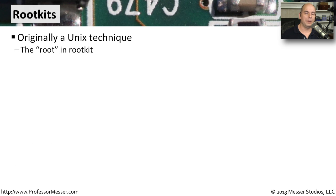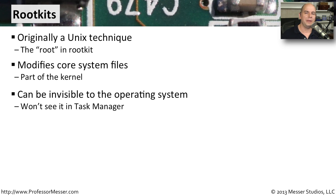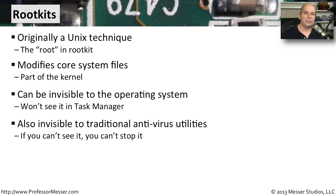A security threat that's not as common as malware but certainly a concern are rootkits. Rootkits come from the name root in Linux, and they get into the kernel of your computer and modify core system files. What's even worse is they become invisible — it's impossible to find a rootkit through normal means. You won't see it in your task manager or see the files because it's part of the operating system kernel itself. Because of this, your antivirus and anti-malware software can't see, identify, or remove it.